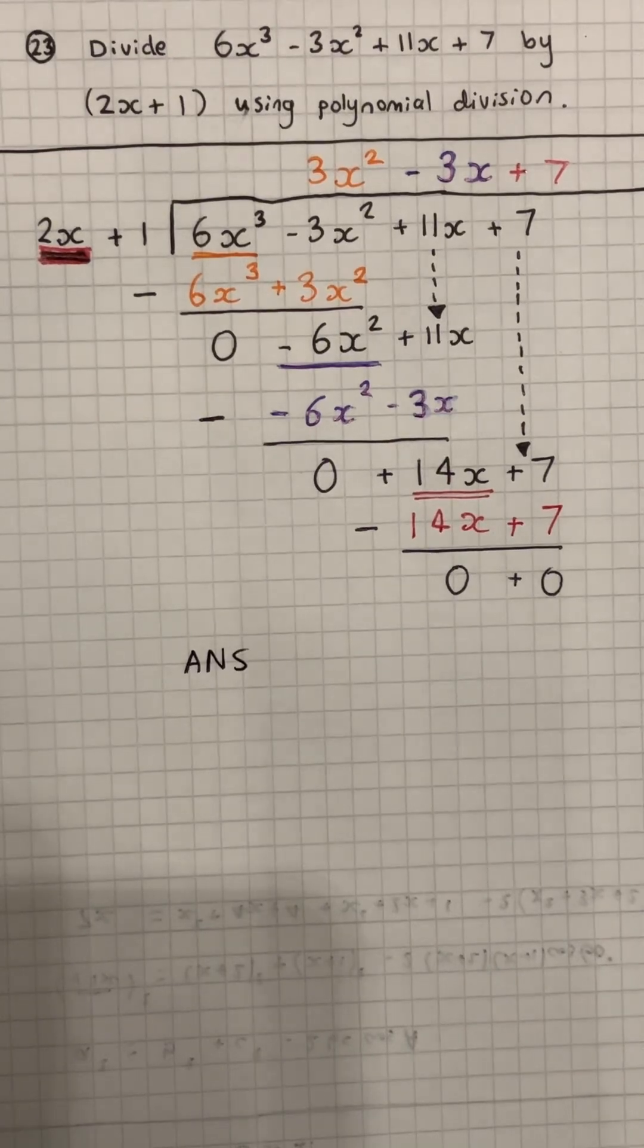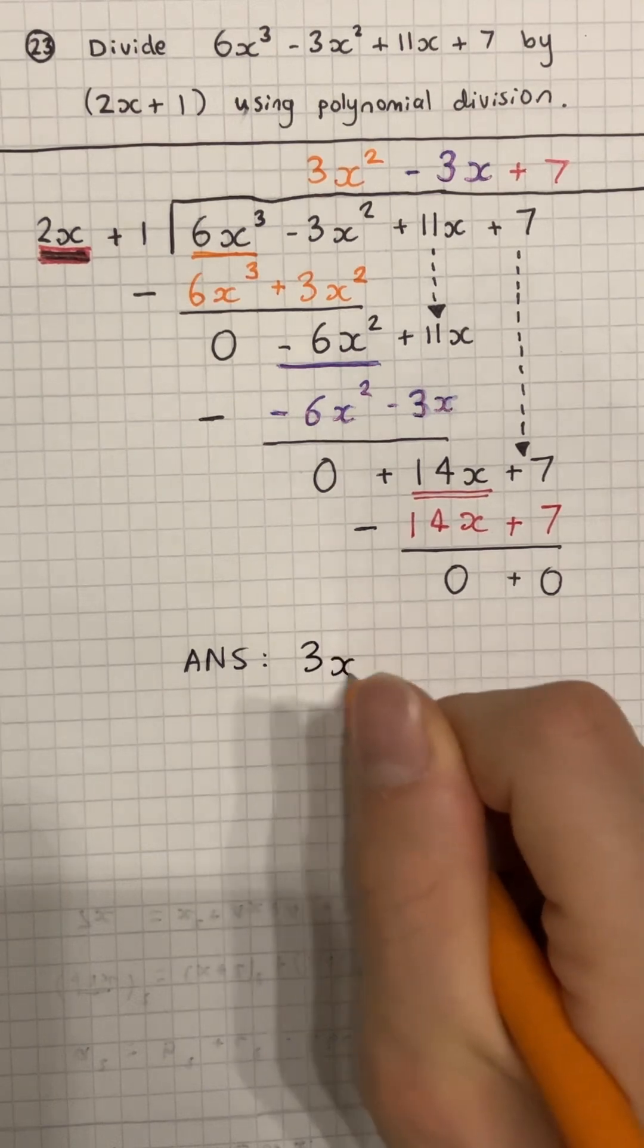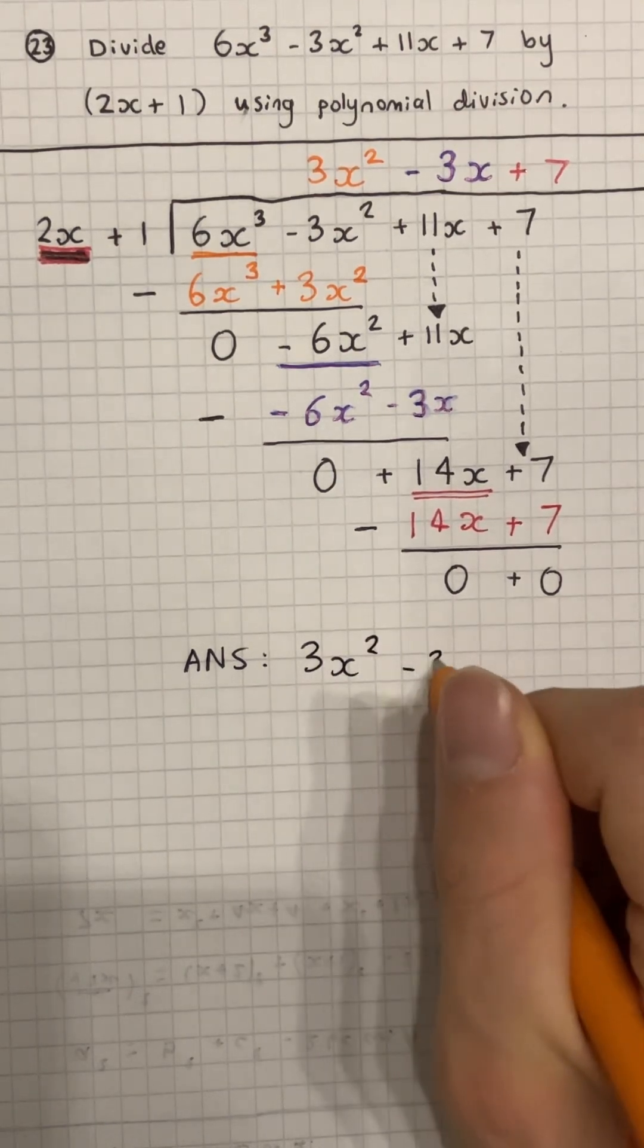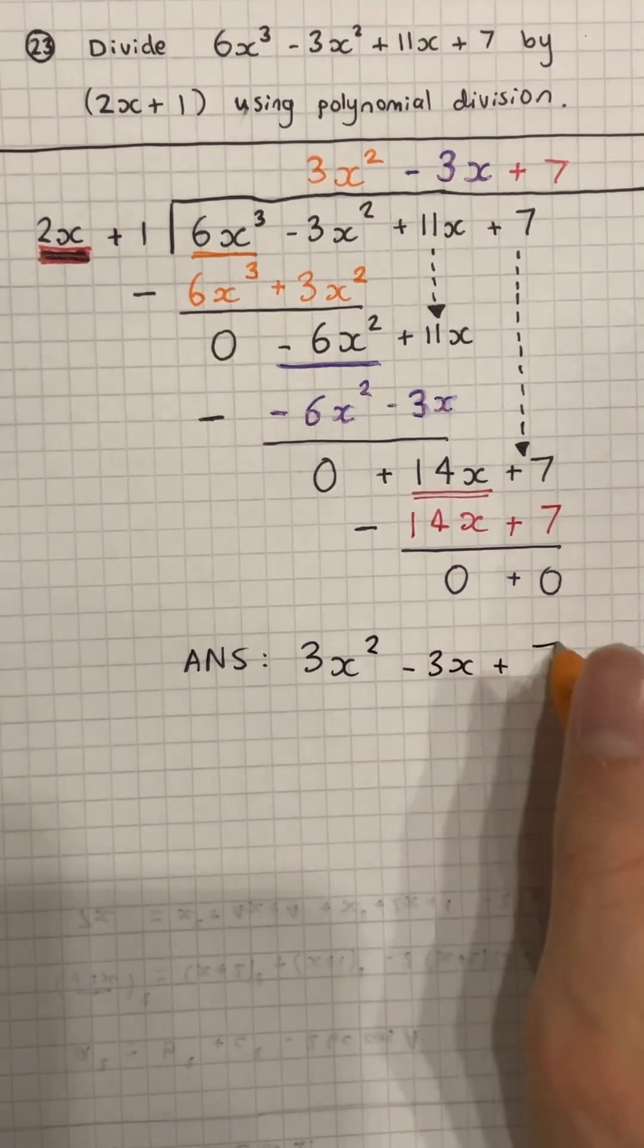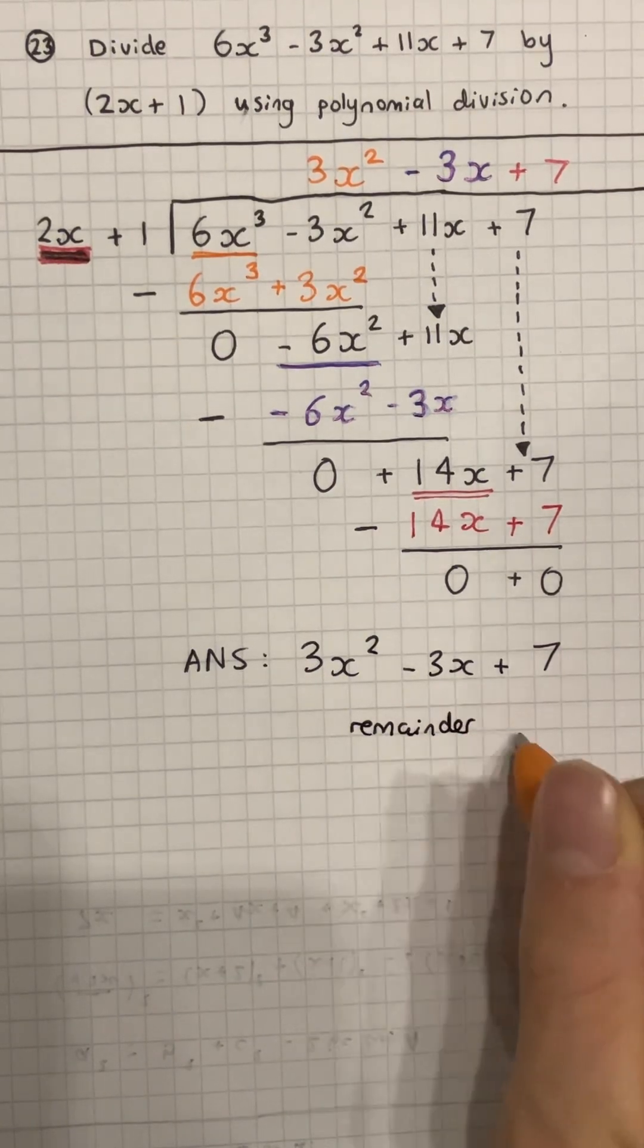So what's actually our answer here? Well, we take from the top line the polynomial, 3x squared minus 3x plus 7. As I say, this remainder is 0. It could be a different number.